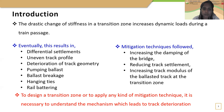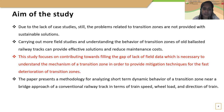If the track is not maintained properly, it causes risk of derailment, reduces ride quality, and leads to speed reduction. In order to reduce the deficiencies of transition zones, many mitigation techniques have been suggested. To design a transition zone or to apply such mitigation techniques, it is necessary to understand the mechanism which leads to deterioration. Although these problems related to transition zones are critical, no sustainable solutions have been provided. Carrying out more field studies and understanding the behavior of transition zones of ballasted railway tracks can contribute to a proper understanding of the mechanism and provide effective solutions.